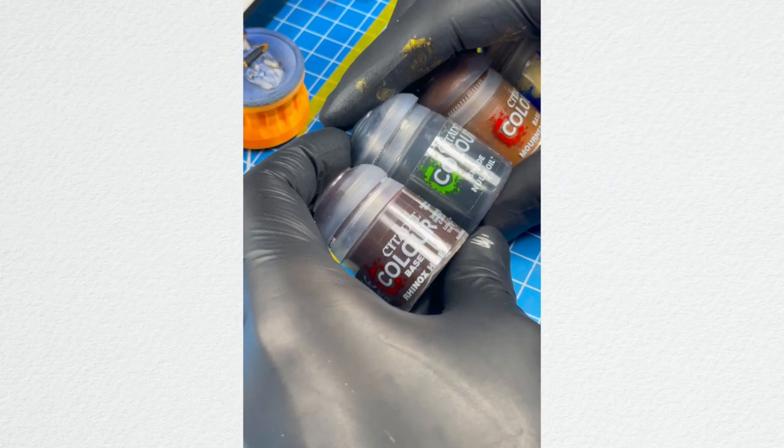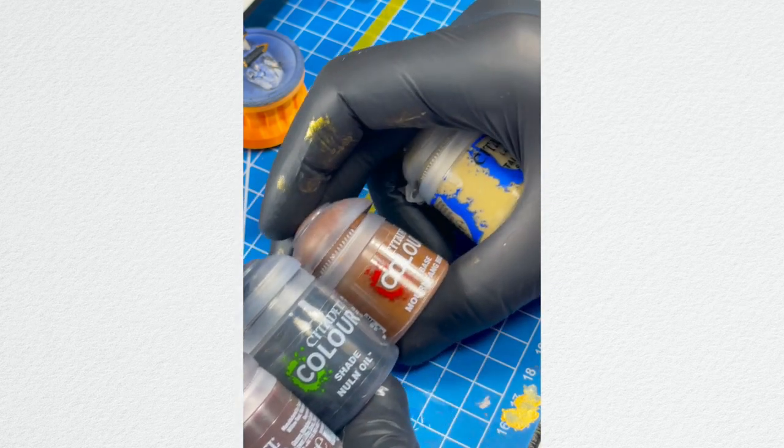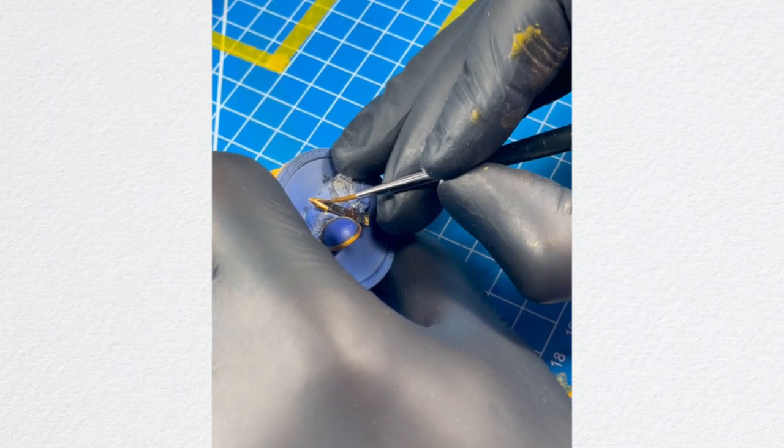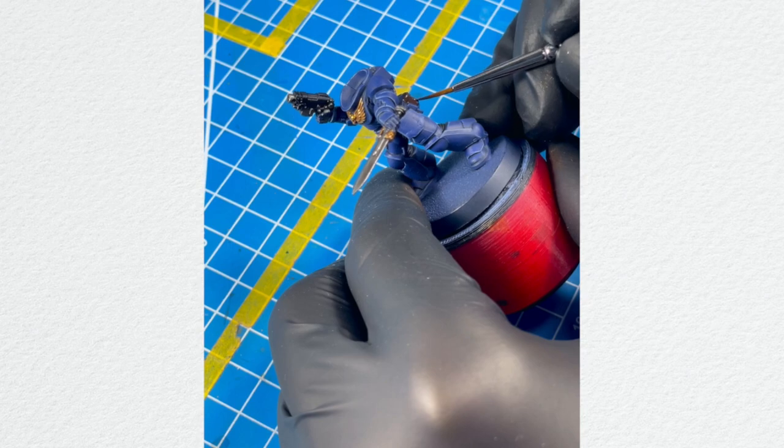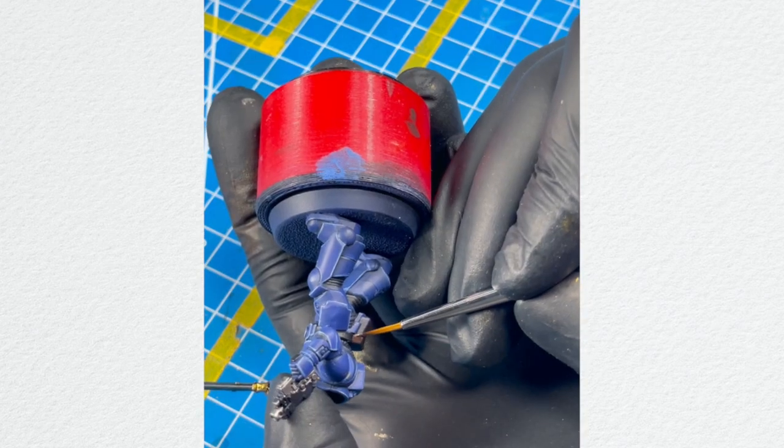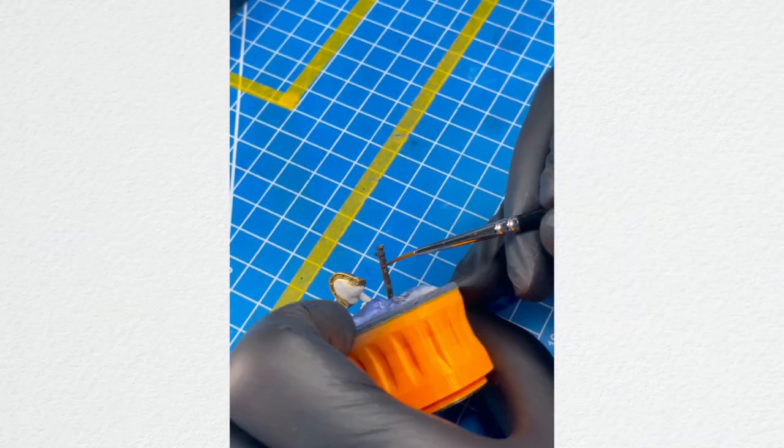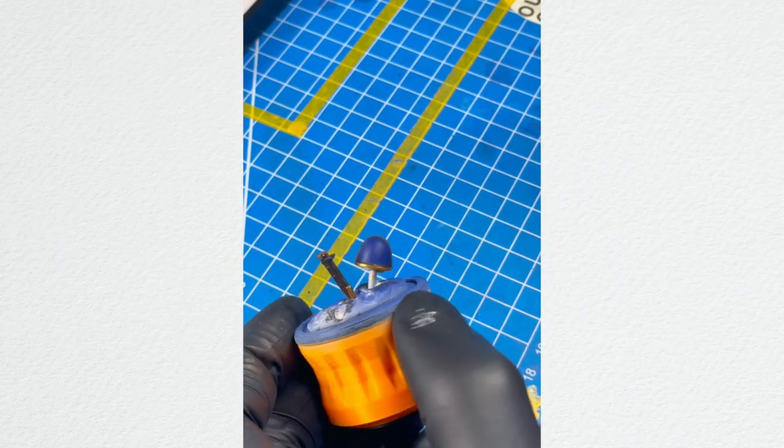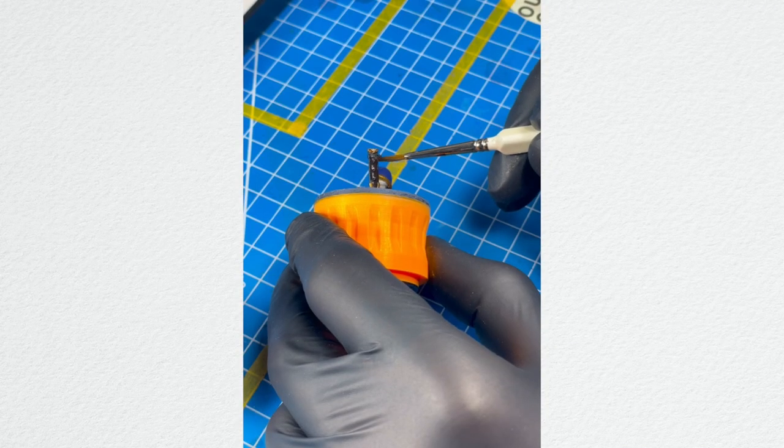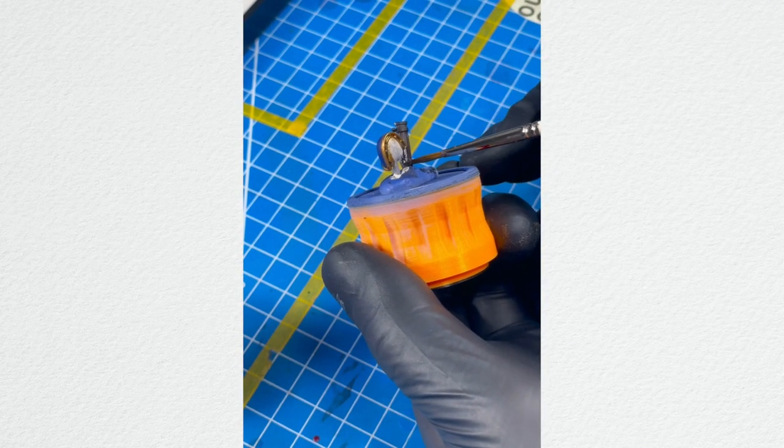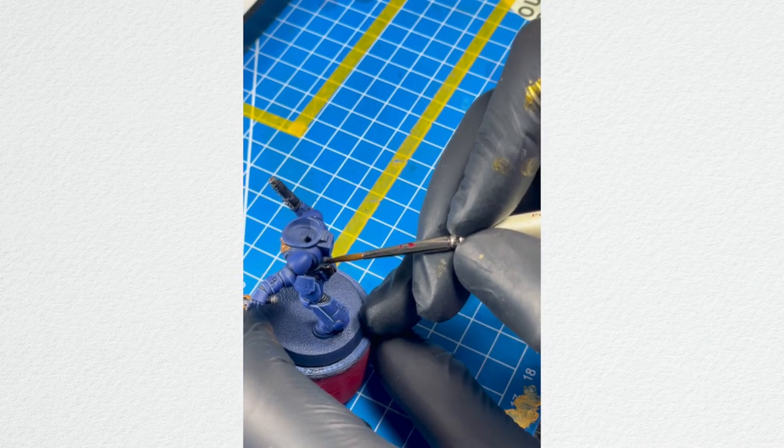Okay, our armor, our gold, our silver is painted up. Now it's time for the leather parts. Go for Rhinox Hide, Nuln Oil, Mournfang Brown, and Karak Stone for the highlights. And just basically paint everything that's made out of leather using Rhinox Hide. Give it a good base coat. Okay, our leather needs a wash. Go for Nuln Oil and put it all over the leather parts.